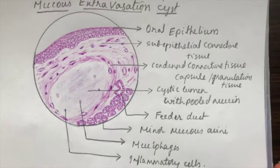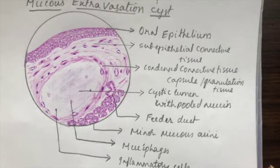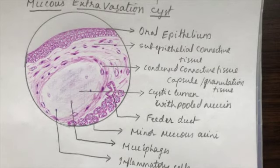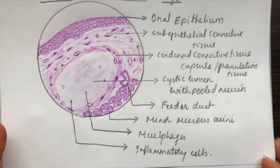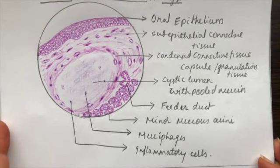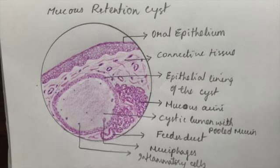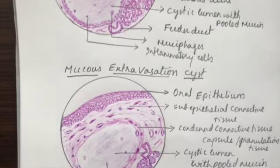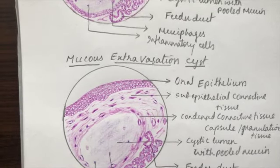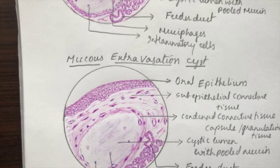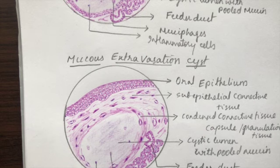Hope this was helpful. Please practice these diagrams — this will definitely help you draw better in exams and also help you understand the concept of mucocele. Here is the mucus retention type of cyst, and here is the mucus extravasation type. Hope you understand the difference between both these cysts. Thank you for watching this video. Please share, like, and comment. I'll be back with another histopathology diagram soon — thank you, subscribe to my channel, bye, see you all soon!